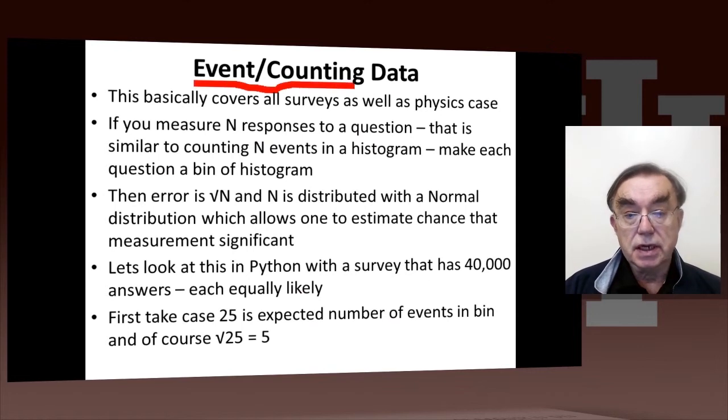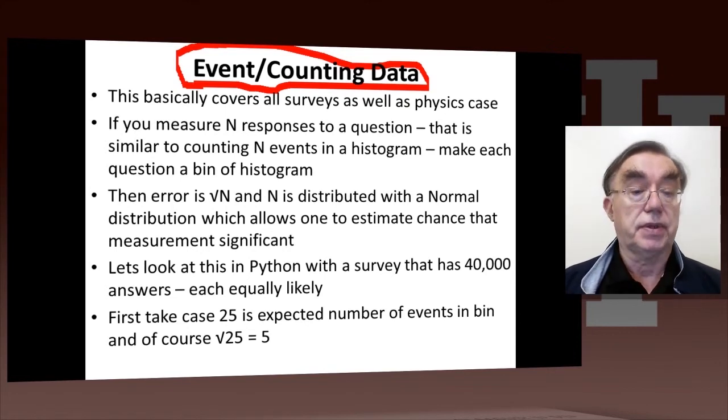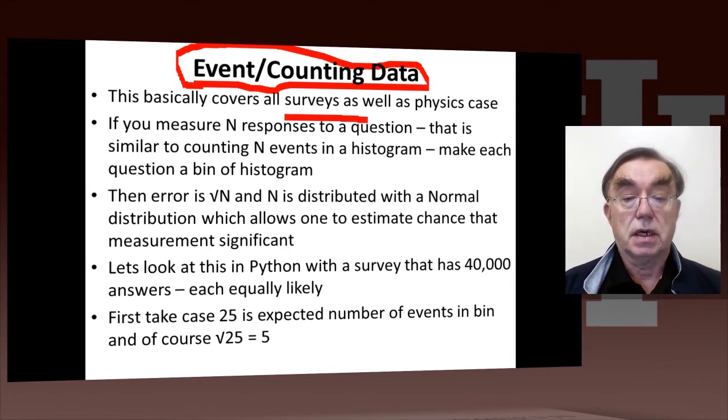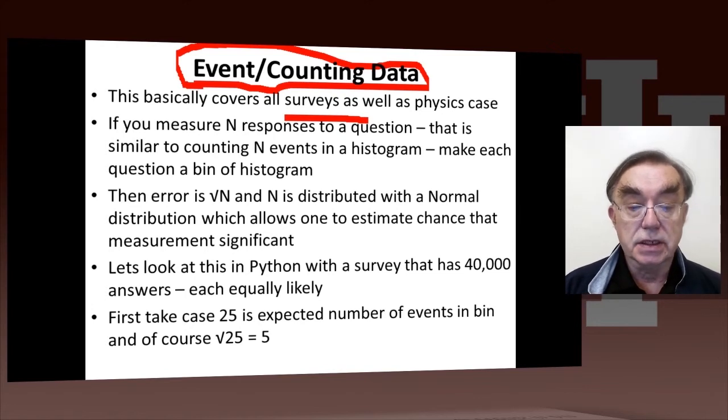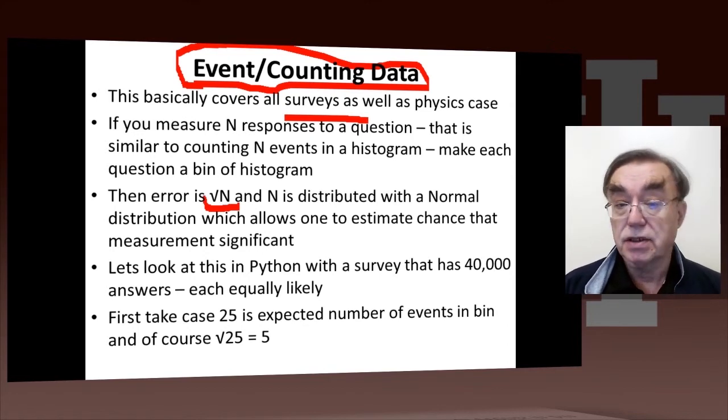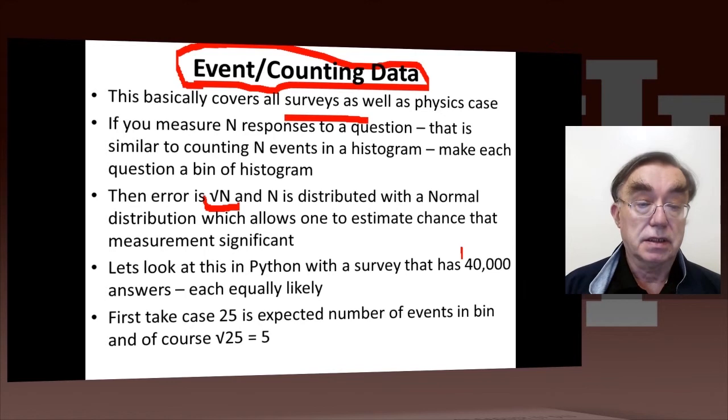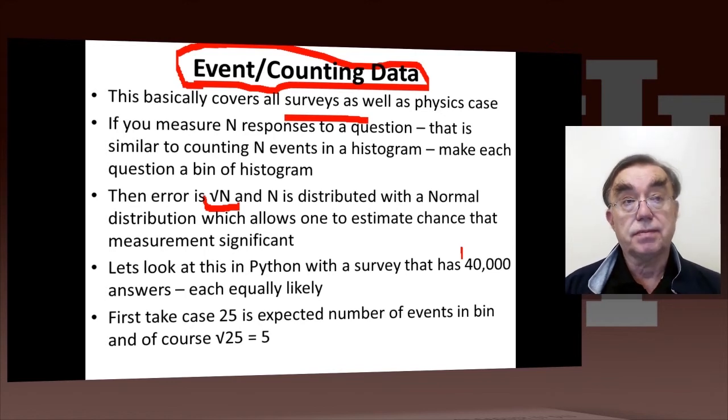Here we're looking at the theory of events and counting data, and this covers all sorts of things, in particular surveys. If you have n responses to a question, that's equivalent or similar to counting n events. And that error is square root of n. So that's why you tend to want lots of people in your survey, because otherwise you will get a significant error.